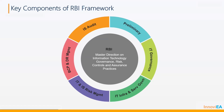If we bifurcate this document, it has got six chapters in it, starting with the preliminary chapter which talks about the applicability — basically which all regulated entities it is applicable to. We have a dedicated slide on that and we'll go into the details after this slide.